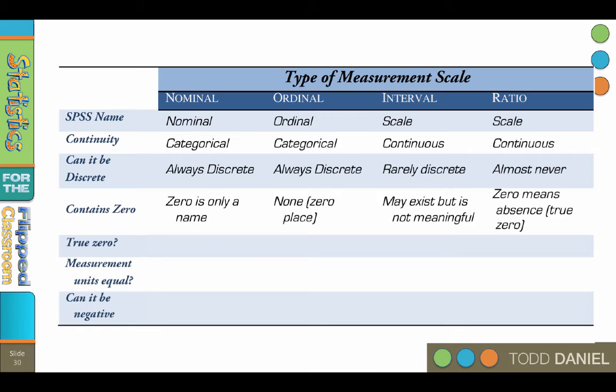What about the role of zero? In the nominal scale, zero is only a name. It does not have a true meaning. You cannot have a zero in the ordinal scale. There is no zero place. Interval scales may have a zero, but it's arbitrary and does not have a specific meaning, typically. Only in the ratio scale do you have a true zero in which zero means absence of any quantity. It is also only in the ratio scale that you can have a true zero.